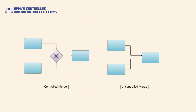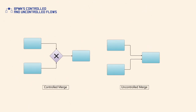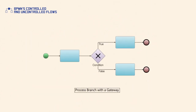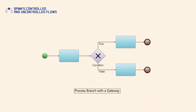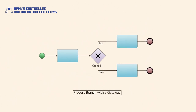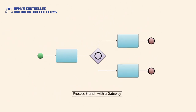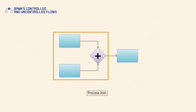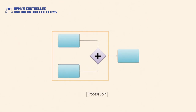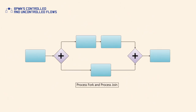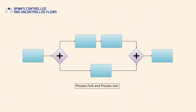To perform a merge, BPMN uses an exclusive gateway or multiple incoming sequence flows for an activity. Unlike process forks and mergers, process branches and joins can only be modelled with controlled flows. Branches or decisions are represented with exclusive or inclusive gateways, which ensures the flow of control can take one or more alternative paths. Process join refers to the point in the process where two or more parallel paths combine into one path, also known as synchronisation. For representing process joins, BPMN uses a parallel gateway. A process join is commonly used in combination with a controlled fork.